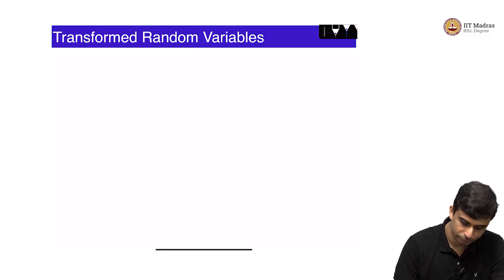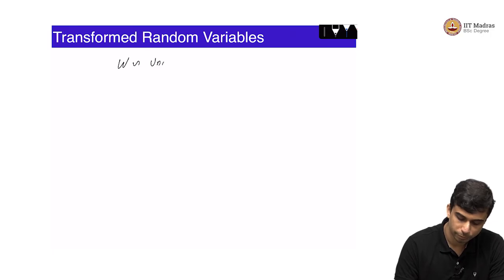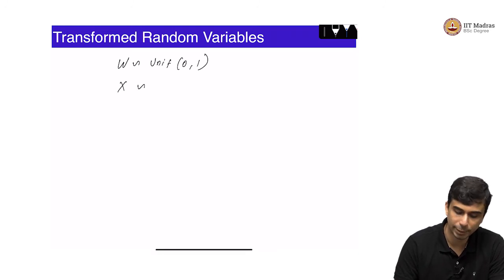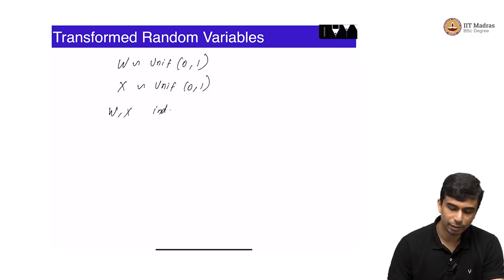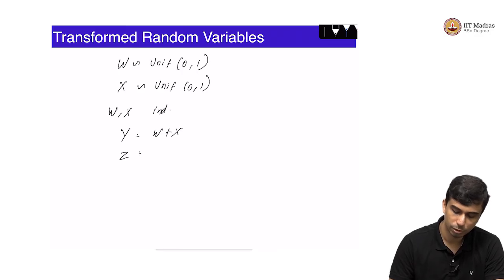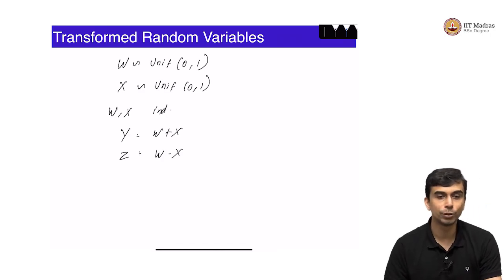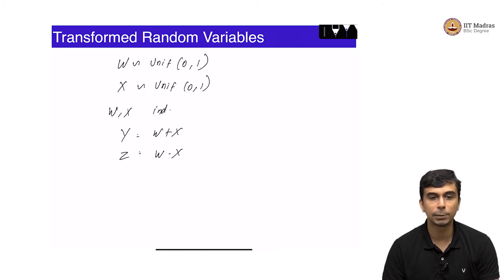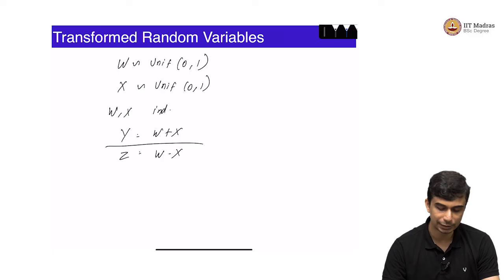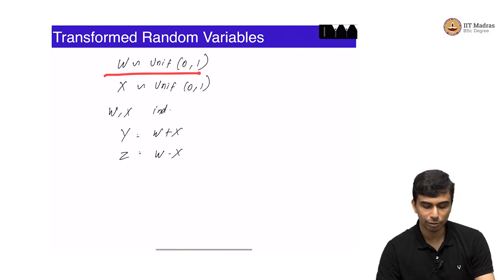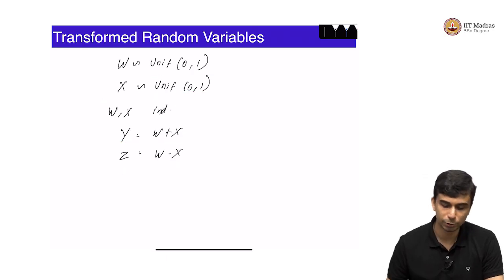Let us do a very simple example. Let w be distributed as Uniform(0,1) and x be distributed as Uniform(0,1), and let them also be independent. We define two random variables y and z: y equals w plus x, and z equals w minus x. In this particular example you do not need to go to the extreme of using the change of variable rule, but it gives a very elegant answer and is applicable to more complex cases.